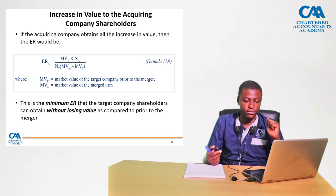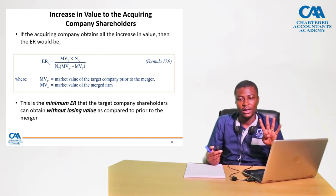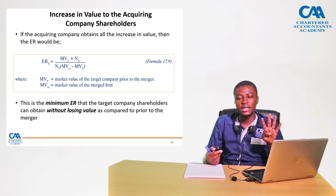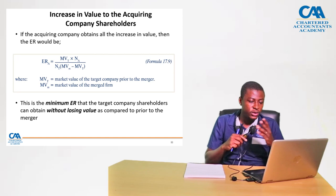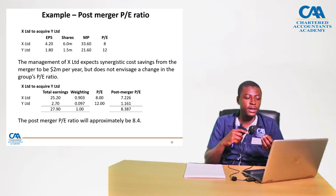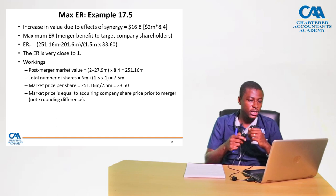I want to emphasize these four formulas. The first two were around erosion of the price-earnings ratio. The last two are around erosion of market values. In the examination, you need to be very clear about what the required instruction is in order to know which formula to apply. This example illustrates calculating the post-merger PE ratio using weighted averages, the maximum exchange ratio taking into account synergistic benefits, and the minimum exchange ratio.